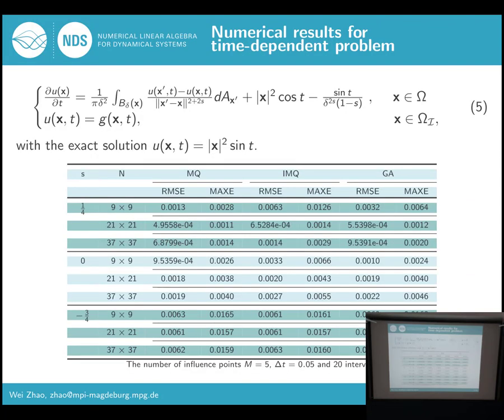The next example is a time-dependent problem. We still define a smooth function as the exact solution. We consider three different RBF functions and two different error norms. From the results in this table, we can find good results. For this example, we only chose five influence points. If the accuracy is not good enough, we can increase this number.